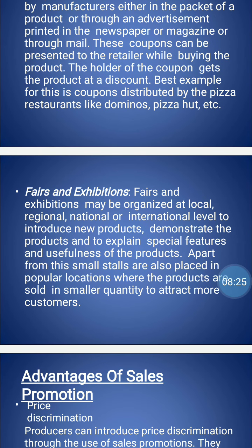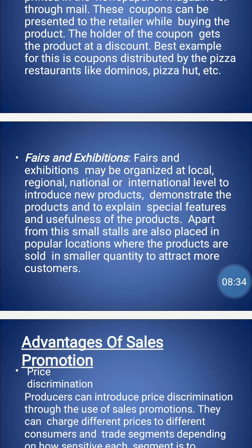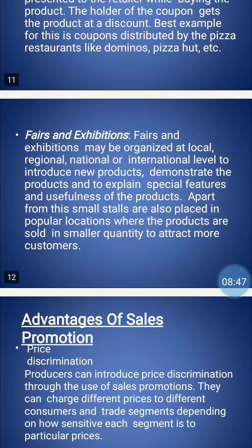There are five steps of sales promotion. The first is attracting the attention — the people's attention should be attracted to the product. Window display, advertisement, and the good personality of the salesman can play a major role in attracting customer attention.